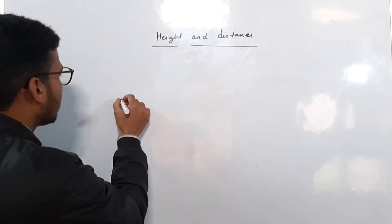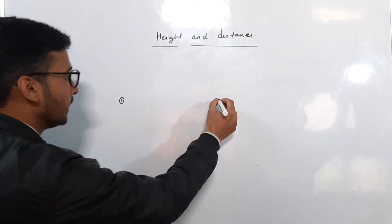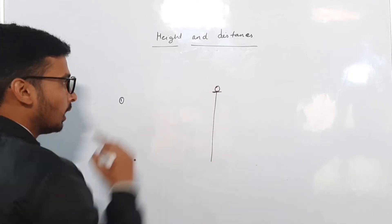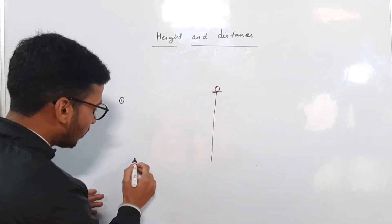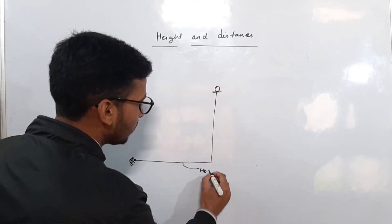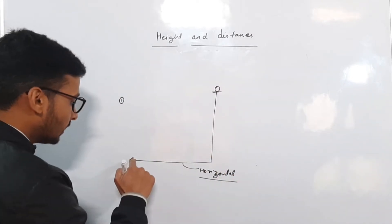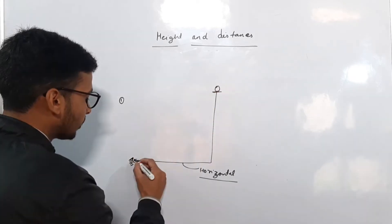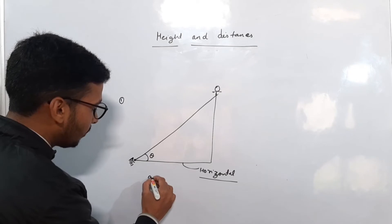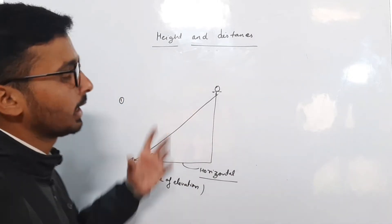Suppose we are standing below and we are seeing something above. Say there is a building, and a friend is standing at the top of that building, while you are standing below and observing. From your eye, we draw a horizontal line — we call it the horizontal line or line of sight. When we look upward, it makes a small angle called theta, and it is called the angle of elevation. The angle of elevation means when you see something from the lower side looking upward.